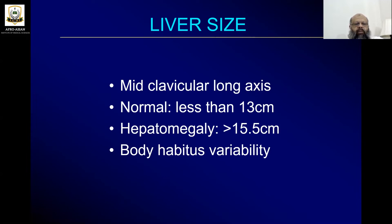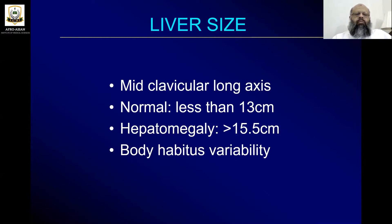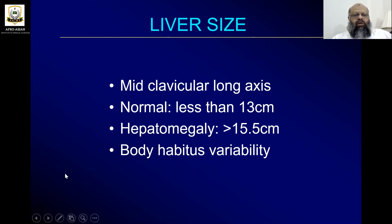Where the liver is above 15.5 centimeters, we label it as hepatomegaly. However, in countries with more infectious diseases, like Pakistan, we take 16 centimeters in adults as the normal upper limit and label hepatomegaly when it is above 16 centimeters. Internationally, 15.5 centimeters is the accepted upper limit.